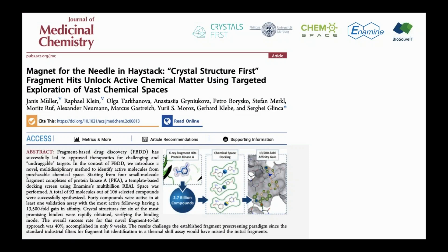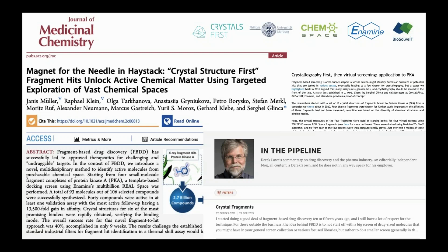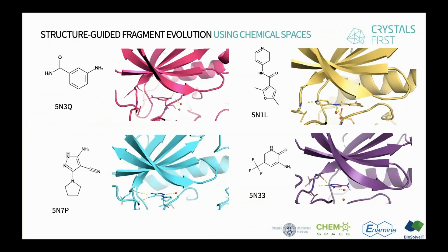The work we'd like to present here was a collaboration between ChemSpace, NMI, BioSolvIT, the Phillips University of Marburg, and Crystals First. Unexpectedly, it got a lot of attention — Derek Lowe summarized the work pretty well, so it's worth a read. We selected from about 20 co-structures approximately four for application of fragment evolution using chemical spaces, without prior knowledge of binding affinity. We just had crystallographic fragment hits.